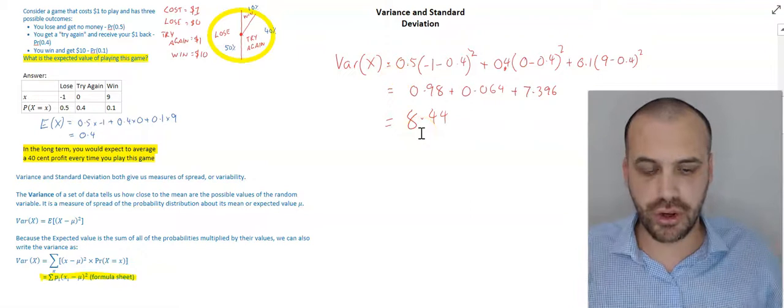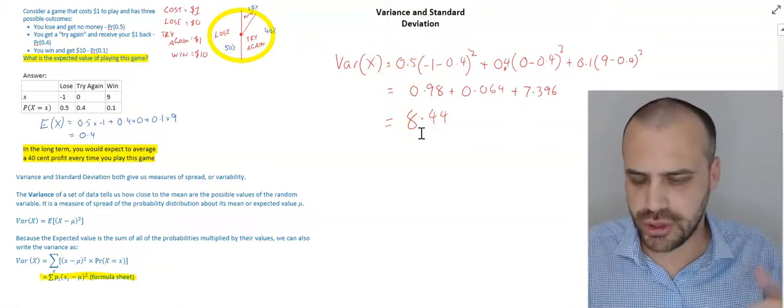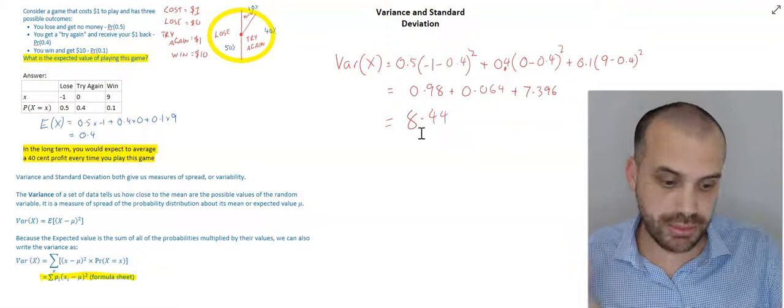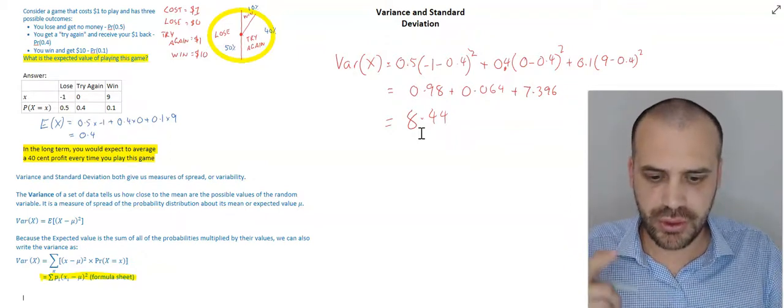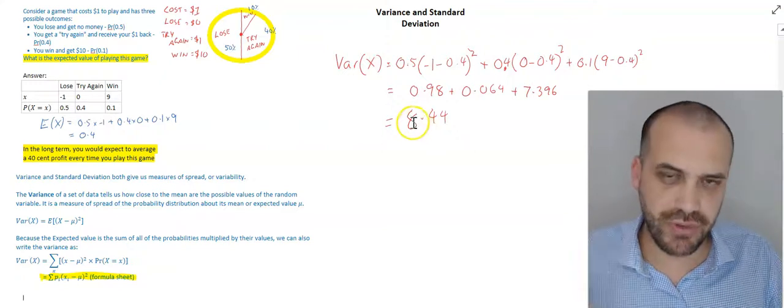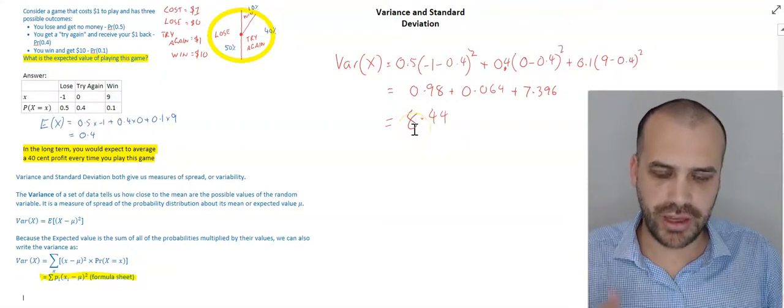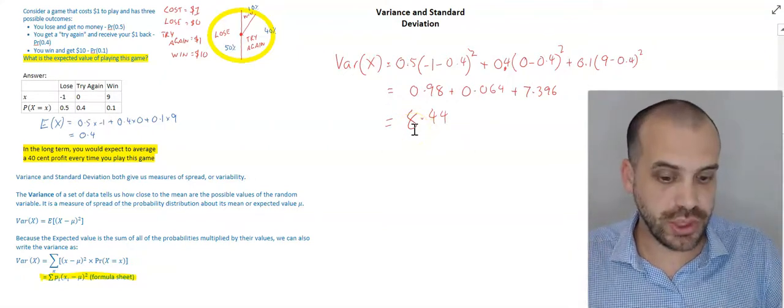Now, that is a measure of variability. Now, if we had two games that we could compare, that we were choosing between, and they both had the same expected value, you could then make a decision based on the variance to decide, well, they've both got the same expected value, but which one's more risky?